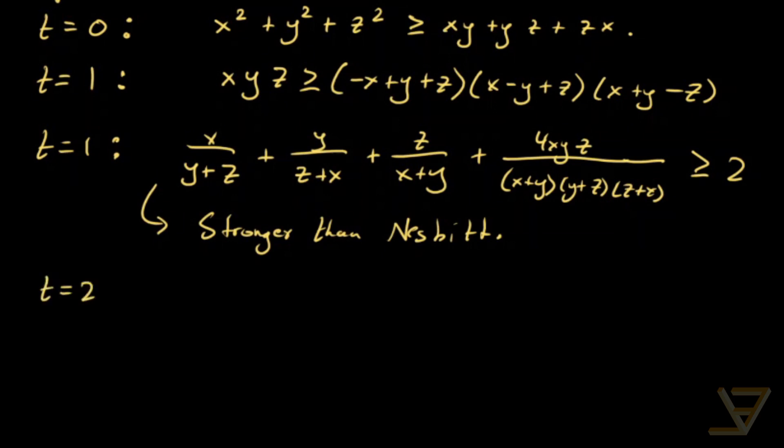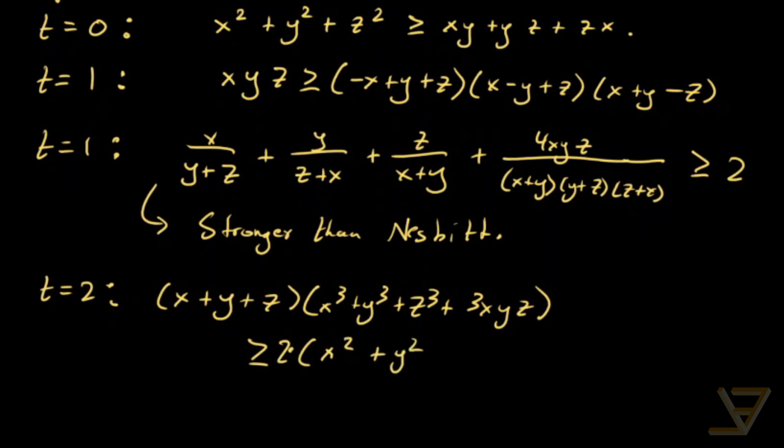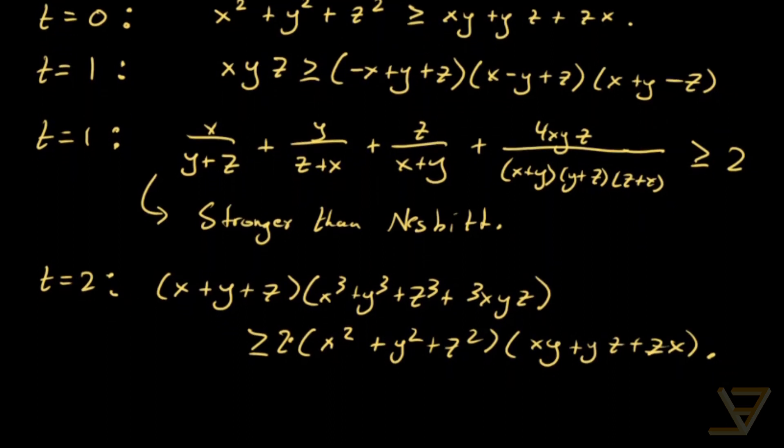For t equals two, we have that in factored form (x+y+z)(x³+y³+z³+3xyz) ≥ 2(x²+y²+z²)(xy+yz+zx). So again, that's an interesting way of expressing the t equals two form of Schur's inequality,